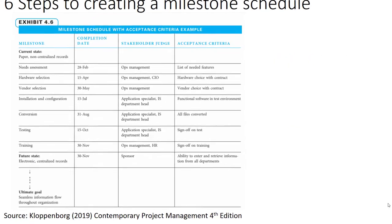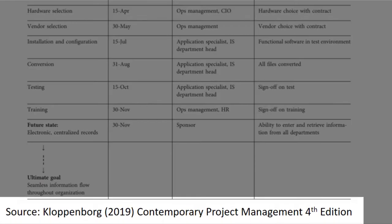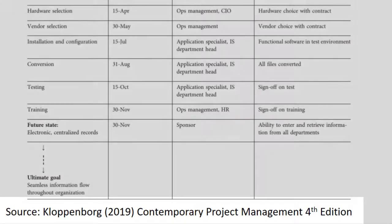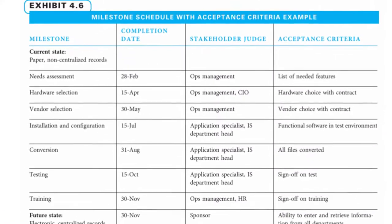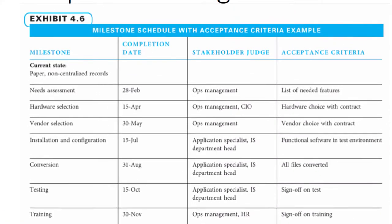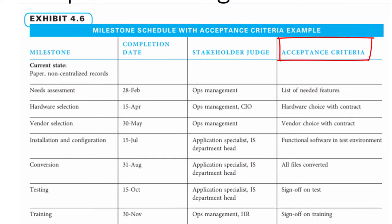In this instance, we will apply the method used in Kloppenborg's Contemporary Project Management textbook. The main headings are Milestone, Completion Date, Stakeholder Judge, and Acceptance Criteria.